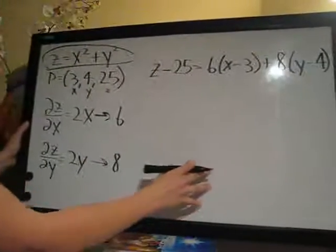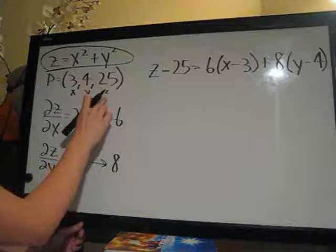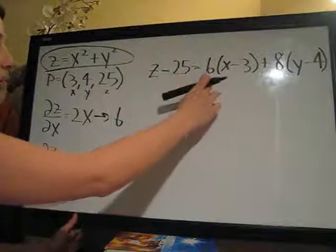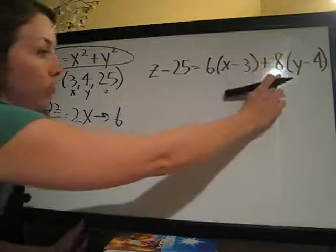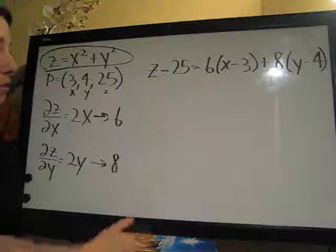We always plug things in this order. We always have Z here, always have the point at Z here. Slope in the X direction, X minus X point, slope in the Y direction, Y minus Y point, always is how we start this equation.